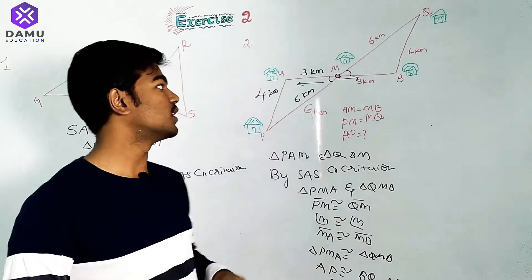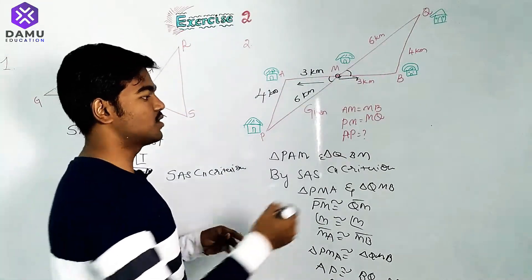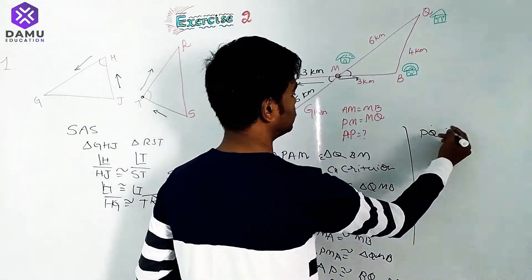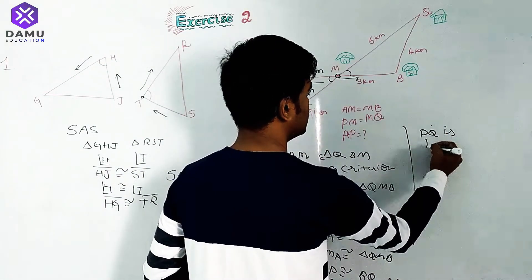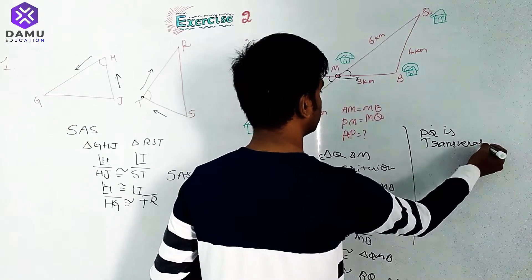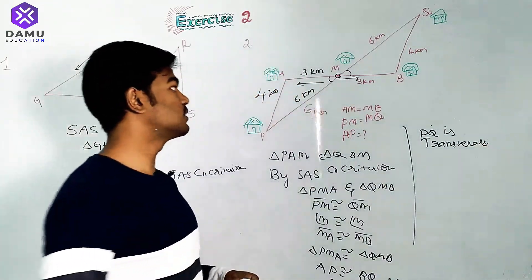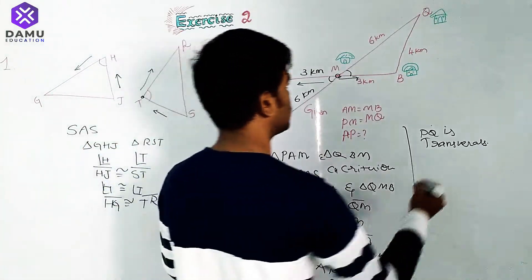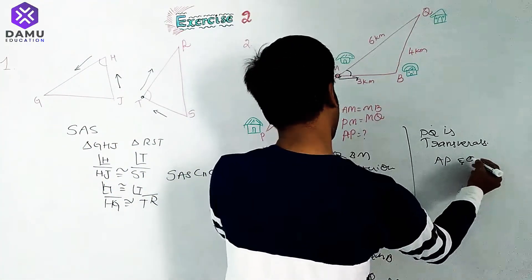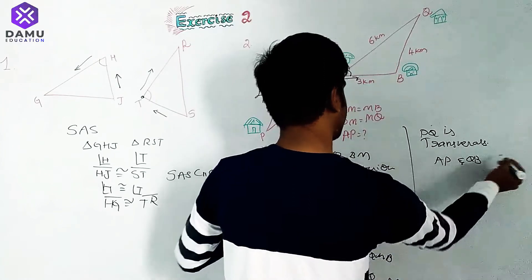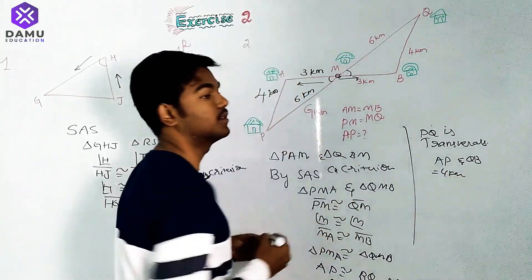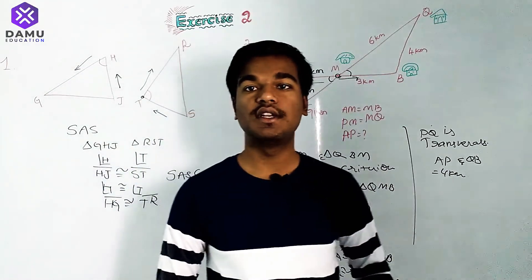Another approach: AP and QB are parallel to each other, and PQ acts as a transversal. Since AP and QB are parallel and equal, we can also conclude AP equals 4 kilometers using this alternate method.